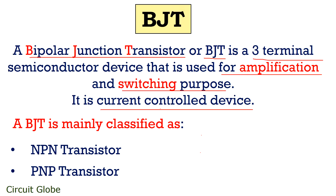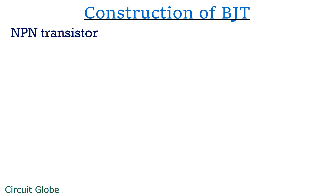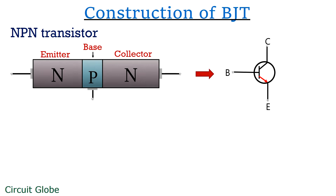Let's move further and have a look at the construction of BJT. We will separately discuss the construction of both NPN and PNP transistors. An NPN transistor is formed when a P-type semiconductor material is sandwiched between two N-type semiconductor materials, or we can say it is a combination of NP and PN diodes. Out of the three regions, the first one is emitter, the second one is base, and the last one is collector. The emitter supplies majority charge carriers to the base, and the collector region collects the emitted charge carriers.